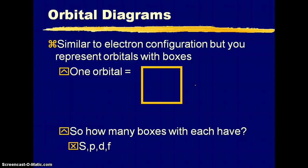Orbital diagrams are just a different way to represent the electron configuration. Now our orbitals are going to be represented by a box. So how many boxes will each of the orbitals have?